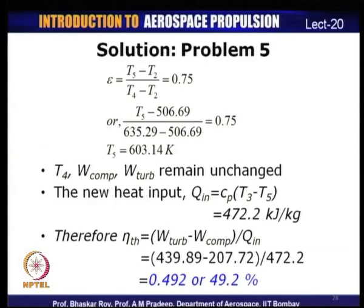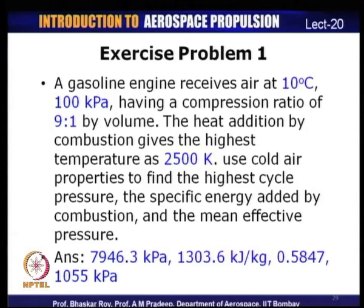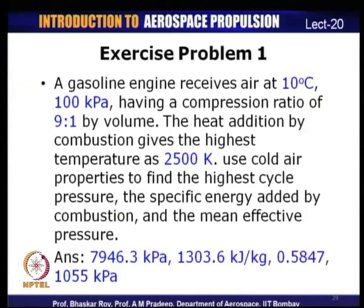There are several exercise problems to solve. Exercise 1 (Otto cycle): A gasoline engine receives air at 10°C, 100 kPa, with compression ratio 9:1. The highest temperature by combustion is 2500 K. Using cold air assumptions, find the highest cycle pressure, specific energy added by combustion, and mean effective pressure. Answers: highest pressure = 7946.3 kPa, energy added = 1303.6 kJ/kg, efficiency = 0.5847, MEP = 1055 kPa.